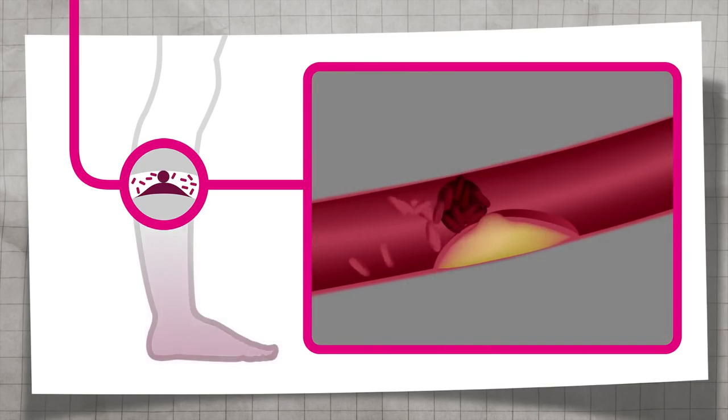This further limits, or may even completely block, blood flow through the artery, causing symptoms to worsen. Vascular obstruction may cause limb ischemia, which in the most severe cases can lead to limb amputation.